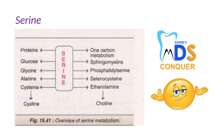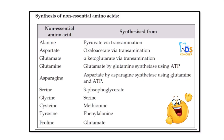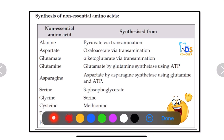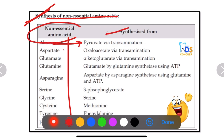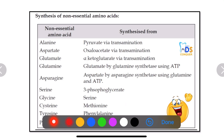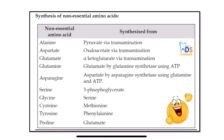Next, serine: the overview of serine metabolism — just have an idea of it. Regarding synthesis of essential and non-essential amino acids, this chart gives a brief review of what the non-essential amino acids are and from where they are synthesized.